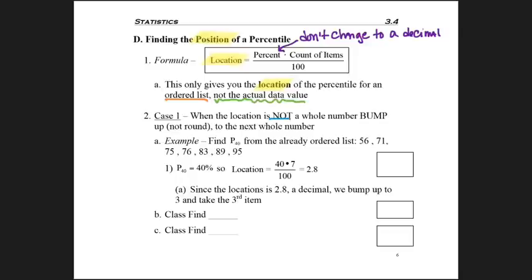So in this first case, we're going to do where the location we're told to go to is not a whole number. In that case, we have to take the location we're told to go to and bump up to the next whole number.